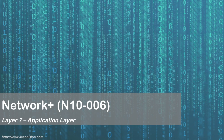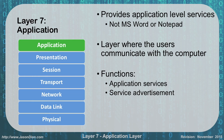Layer 7, the application layer. We're finally to the top of the OSI model. We talked about physical, data link, network, transport, session, and presentation, and now we're finally to the part that the end user usually sees, which is the applications.